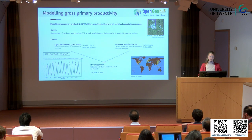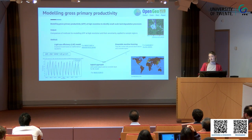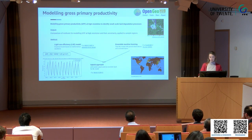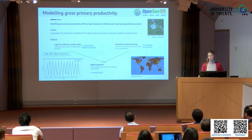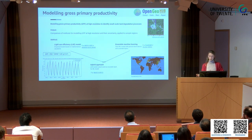Going one step further, we want to model gross primary productivity, which is a more quantifiable measure of land degradation as it comes in grams of carbon. We want to model it at high resolution to identify small-scale processes we might otherwise miss. For that we want to compare different methods — light use efficiency models versus machine learning models — and also feed the outputs of light use efficiency models into the machine learning model to follow a hybrid approach.